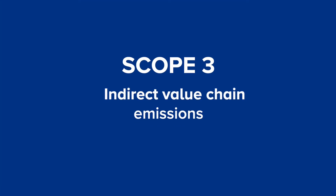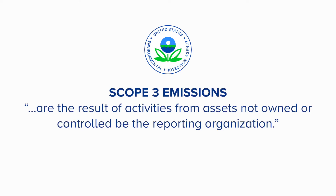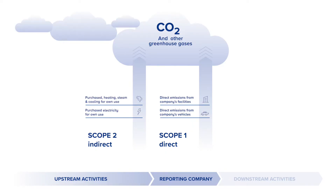Lastly, we come to Scope 3 emissions, the indirect value chain emissions of a reporting company. According to the US Environmental Protection Agency, Scope 3 emissions are the result of activities from assets not owned or controlled by the reporting organization. These emissions can represent the largest portion of its greenhouse gas emissions inventory and are the most challenging ones to calculate. The GHG protocol divides Scope 3 emissions into upstream and downstream emissions.